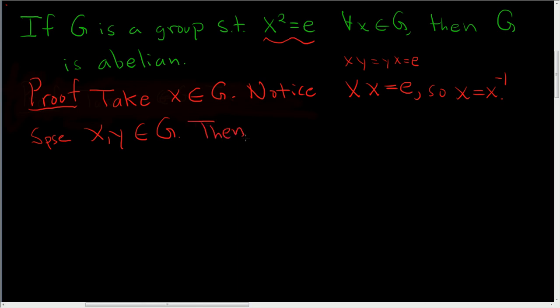So then, and this is a really cool proof, x times y - well, every element is its own inverse, so this is actually equal to x times y inverse.